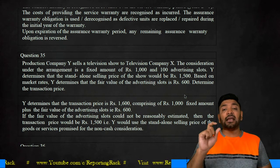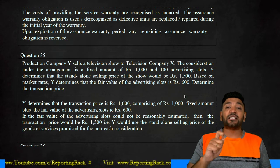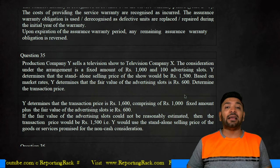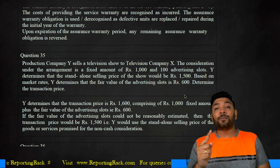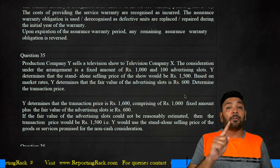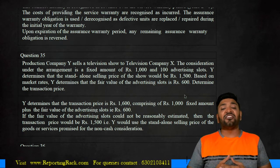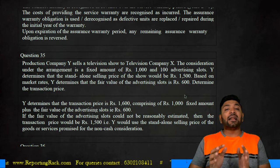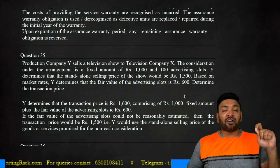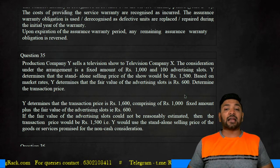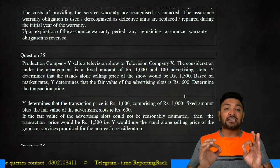To determine the transaction price: the non-cash consideration should be measured at fair value, which is given as 600. Therefore, 1,000 in cash plus 600 fair value of advertisement slots equals a total transaction price of 1,600. If the fair value of advertisement slots had not been given, the standalone price of 1,500 would be used. However, since the fair value is given, the transaction price in this question should be considered as 1,600.